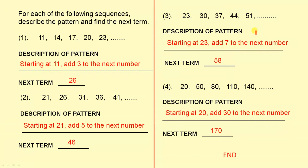Number three. The description of the pattern: starting at twenty-three, add seven to the next number. So the next term is fifty-eight, because fifty-one plus seven is fifty-eight.